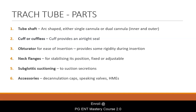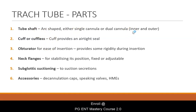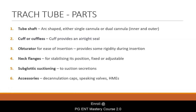The tube shaft is arc shaped. It can be either single cannula or dual cannula. When there is a dual cannula, it will have an inner and an outer cannula. It can be cuffed or cuffless. Whenever a cuff is there, it provides an airtight seal. The obturator is for the ease of insertion — it provides some rigidity during insertion. Neck flanges are for stabilizing position and can be fixed or adjustable. Subglottic suctioning is present in certain tubes to help suction out secretions. Accessories include a decannulation cap, speaking valves, and heat moisture exchangers.